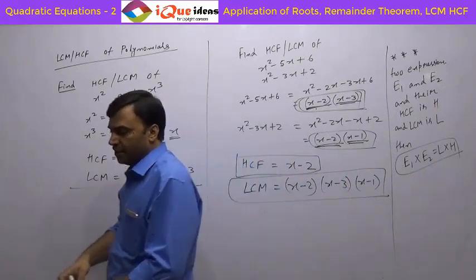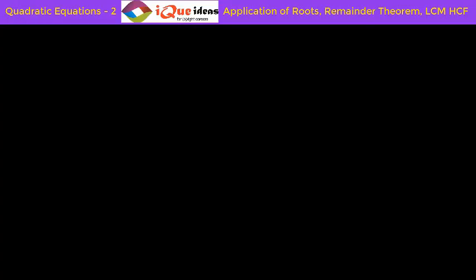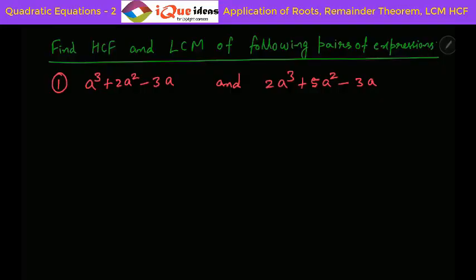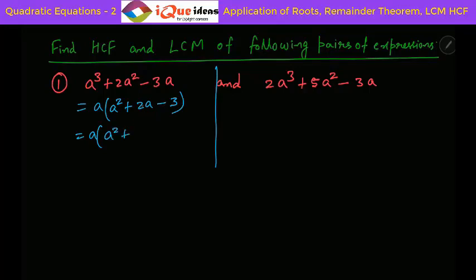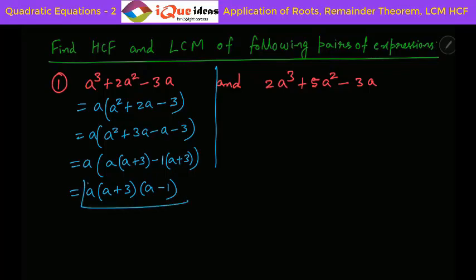Let us take some questions for practice on LCM and HCF of algebraic expressions or polynomials. For the first question, we have to find HCF and LCM of two expressions. First, let us factorize. Taking A common from the first expression gives us A into A square plus 2A minus 3. This can be written as A into A square plus 3A minus A minus 3, which gives A into A plus 3 into A minus 1.